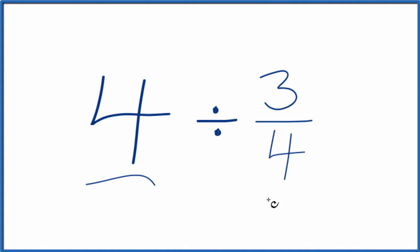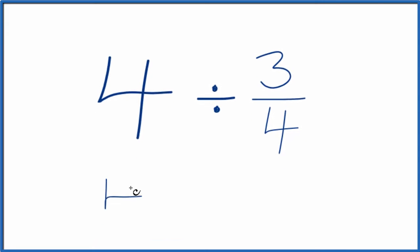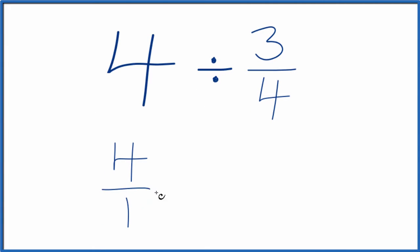Let's divide 4 by 3 fourths and here's how we'll do it. Let's call this 4 over 1. It's still 4, we're just dividing by 1, but now this gives us a fraction and that's going to be helpful.